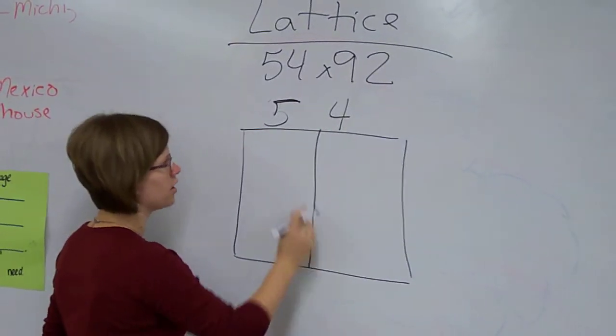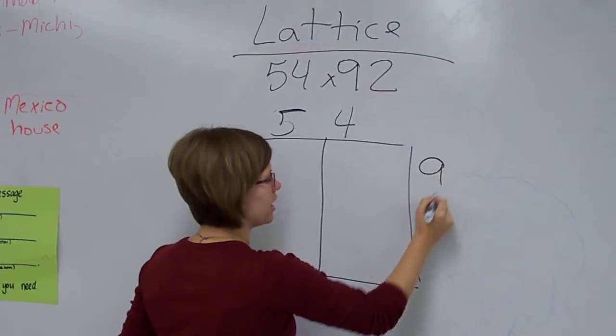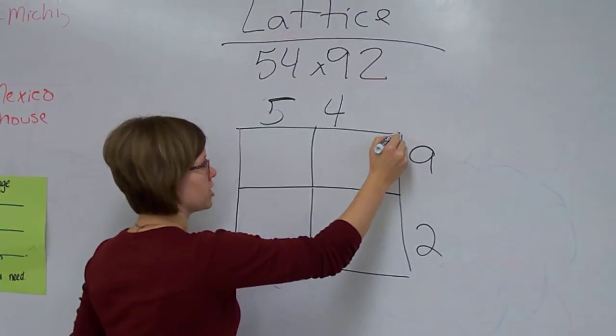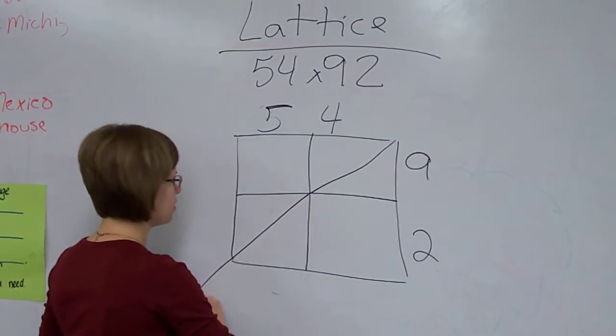And draw 2 columns, 1 for each digit. 92. I need 2 rows, 1 for each digit. And then just cut the boxes directly in half on a triangular.